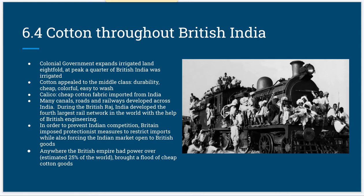This infrastructure benefited India in that it allowed the country better transportation networks that ultimately helped transfer goods and people across the country. To prevent competition from India, Britain imposed protectionist measures to restrict imports whilst also forcing the Indian market open to British goods. The colonial rule of India helped cement Britain's monopoly over the cotton producing market, contributing to the continually growing commercial success of the empire.